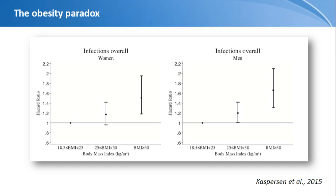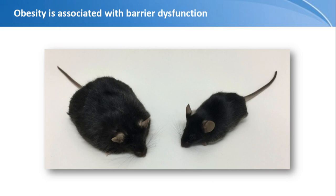Since we had very little mechanistic knowledge, we turned to mice. We used the DBDB mouse, which has a mutation in the leptin receptor that basically prevents this mouse from feeling satiety — it never stops eating. Fed a normal diet, it becomes morbidly obese. Here you can see it alongside its wild-type littermate control.